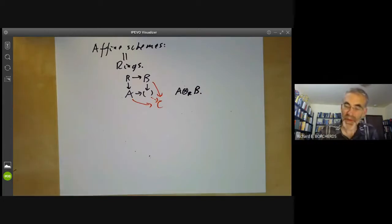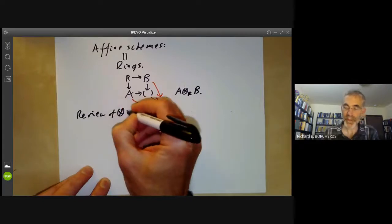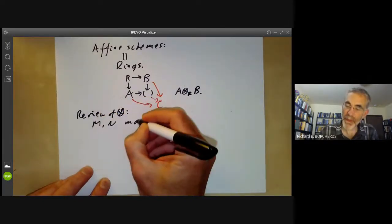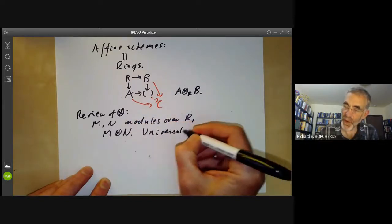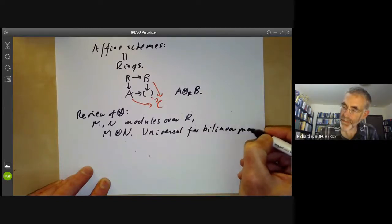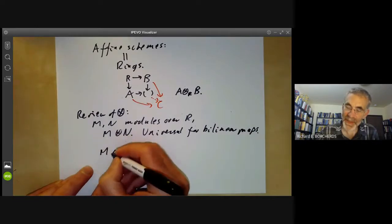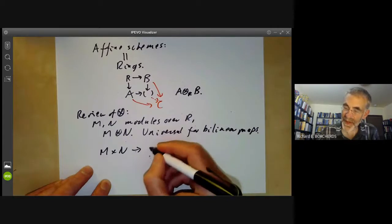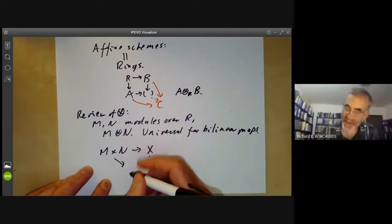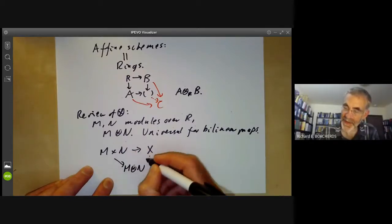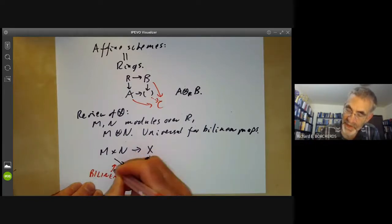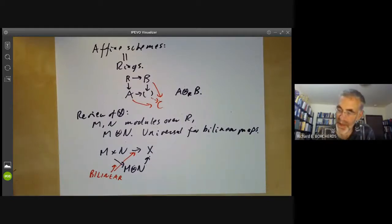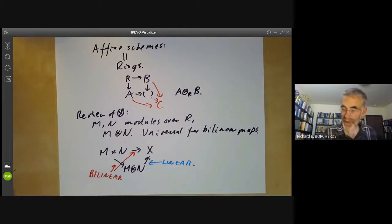This will be the tensor product A tensor over R of B. Let's have a quick review of tensor products. If M and N are modules over R, we have a tensor product M tensor N, which is universal for bilinear maps. In other words, if we've got any bilinear map from M times N to some module X, then this factors through a linear map from M tensor N to X.